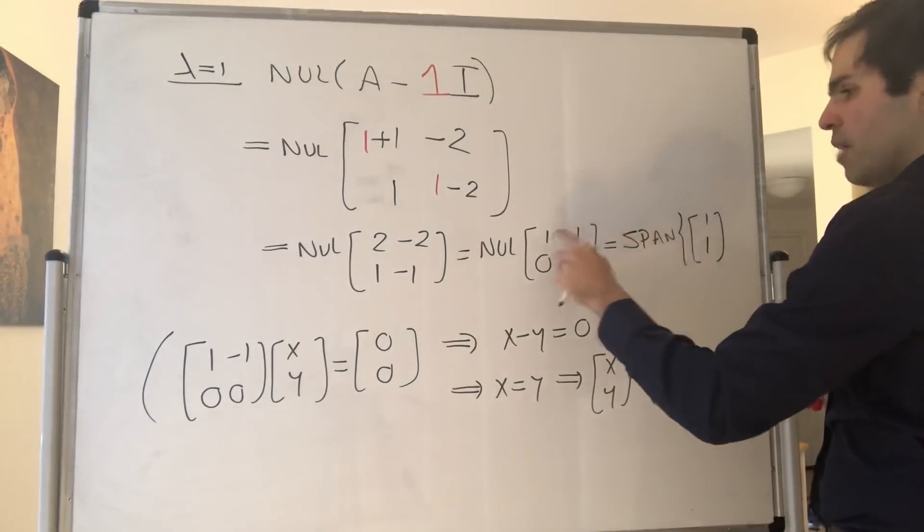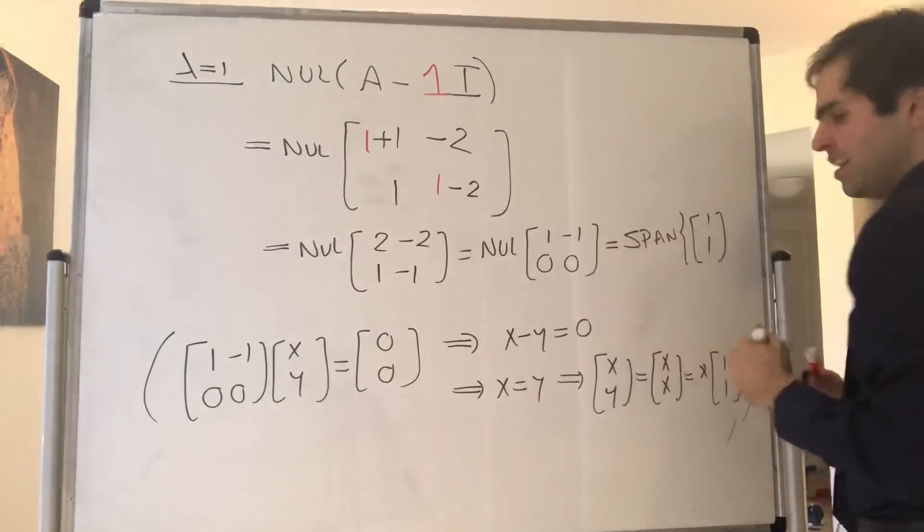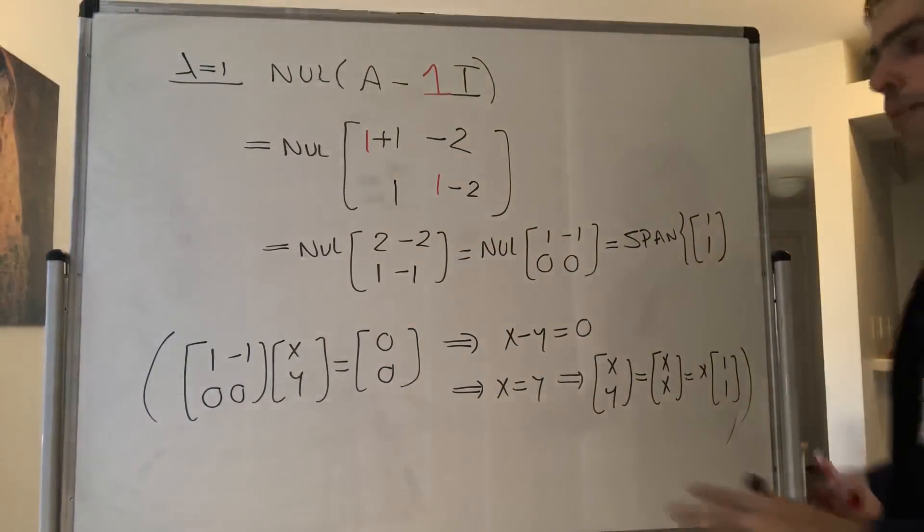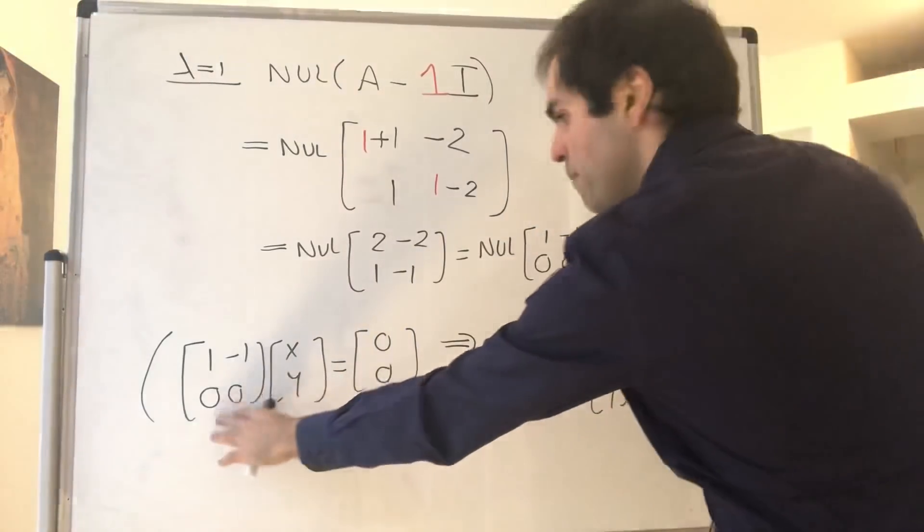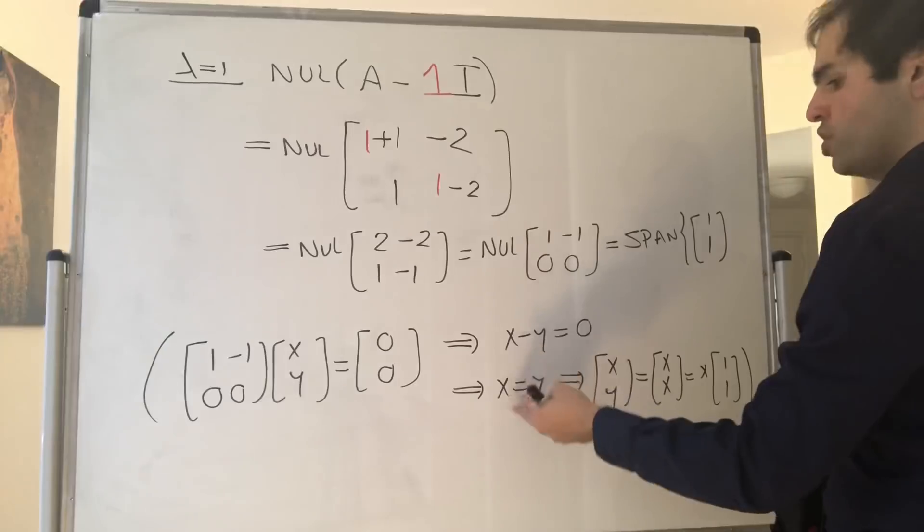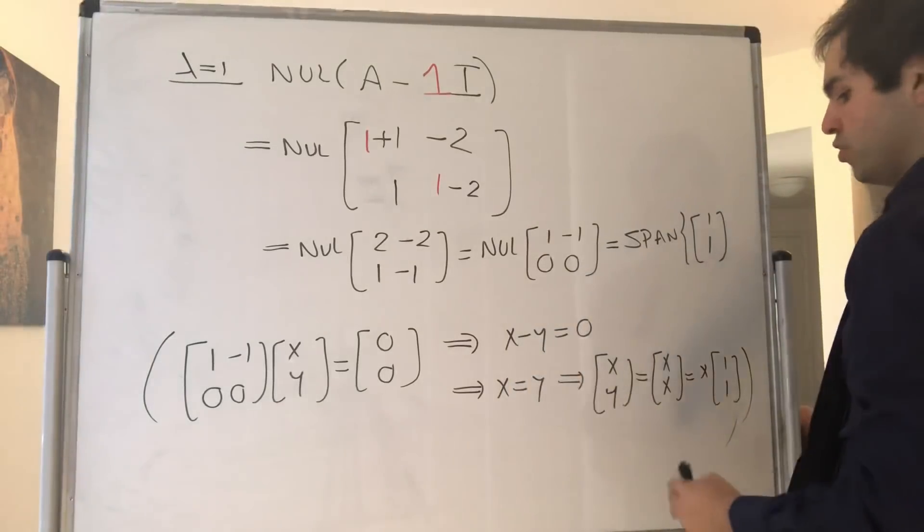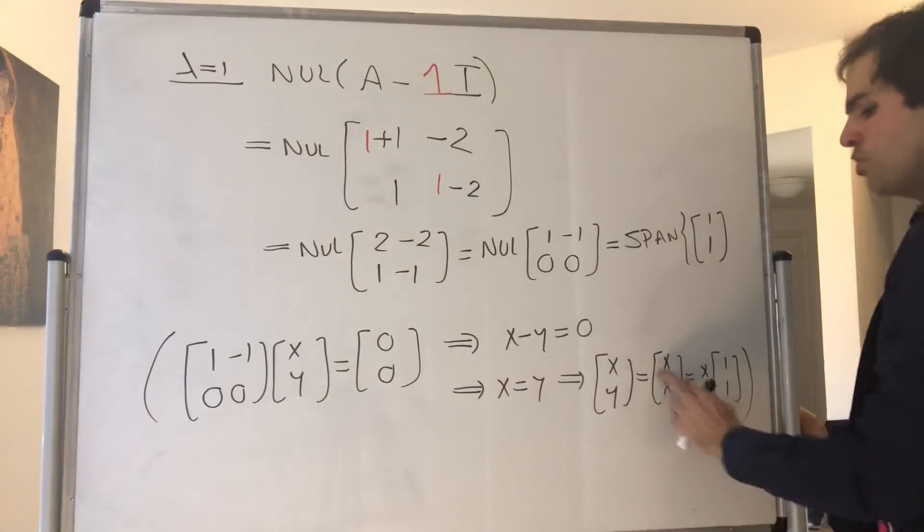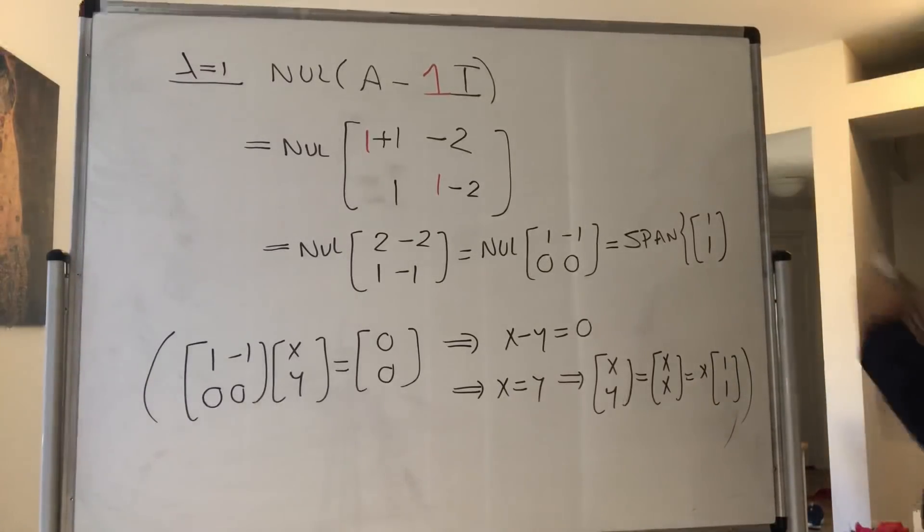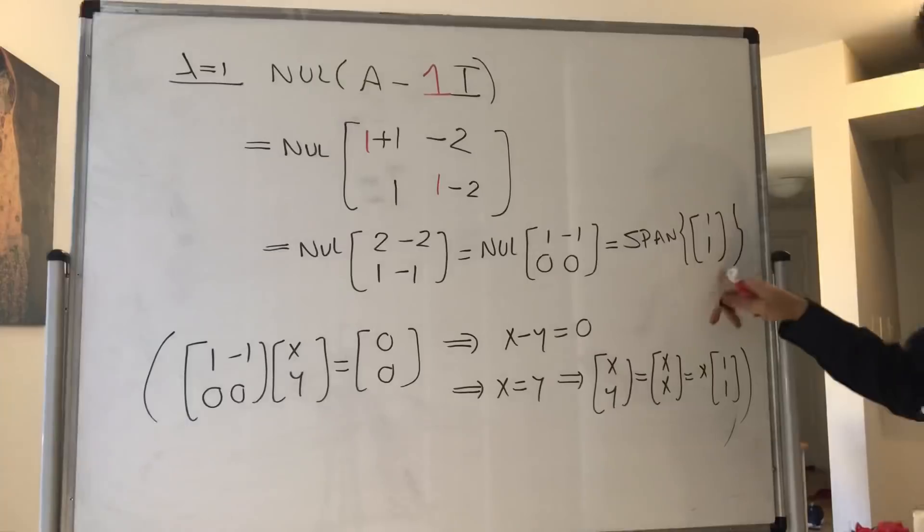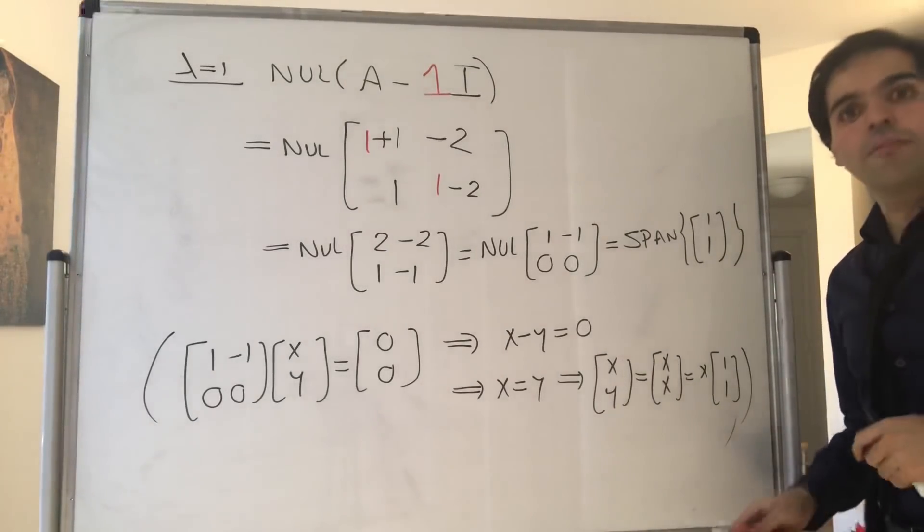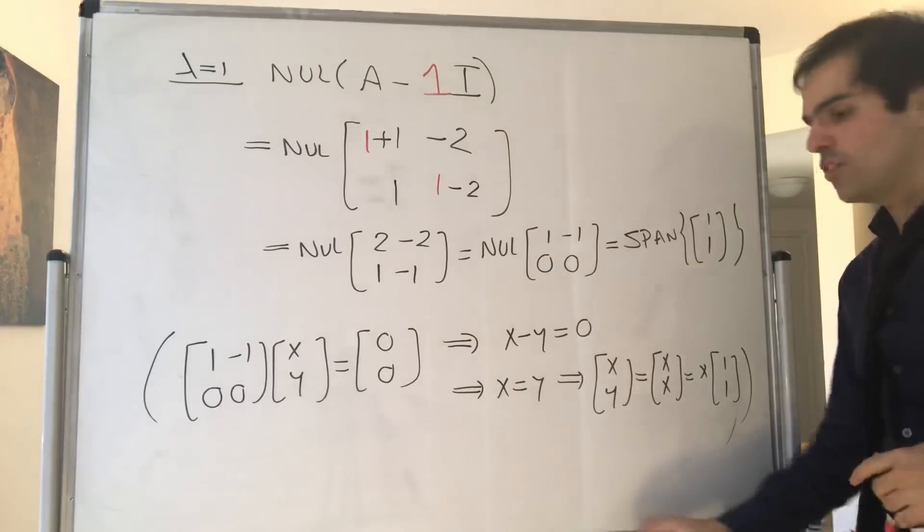Because you see, 1 times 1 plus 1 times minus 1 gives you [0, 0]. Or you do it the more systematic way by solving this equation: matrix applied to [x, y] equals [0, 0], which ultimately gives you x equals y. So [x, y] is [x, x], which gives you x times [1, 1]. And that's why you have that. Therefore, we have the second eigenvector corresponding to lambda equals 1. And now let's conclude.